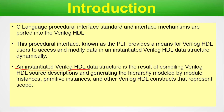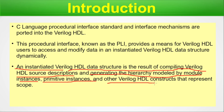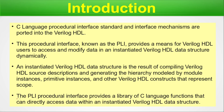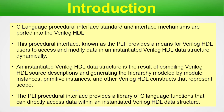An instantiated Verilog HDL data structure is the result of compiling Verilog HDL source description and generating the hierarchy modeled by module instances, primitive instances, and other Verilog HDL constructs that represent the scope. The PLI provides a library of C language functions that can directly access the data within the instantiated Verilog HDL data structure. Those already familiar with PLIs from C language can very easily grasp the Verilog HDL PLIs.